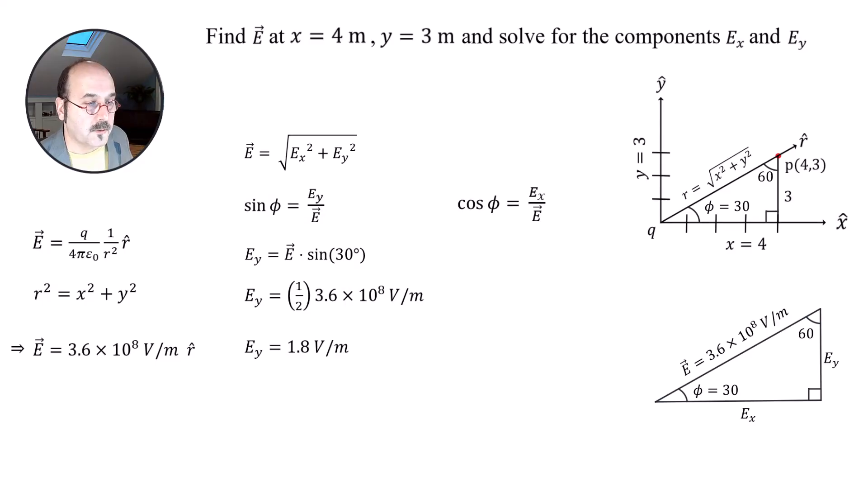And if we just rearrange this, I'm going to say E_X on this side. And I'm skipping a couple of steps here. And that's going to be 0.866 to three decimal places times 3.6 times 10 to the 8, which is equal to 3 point, let's just say 3.1 volts per meter in the X.